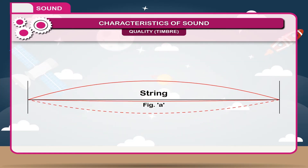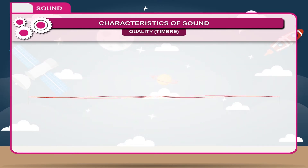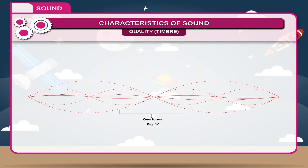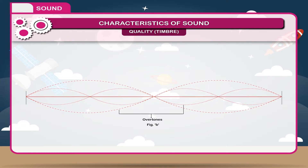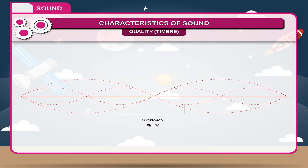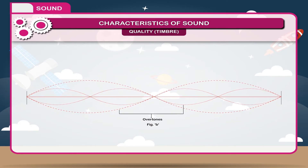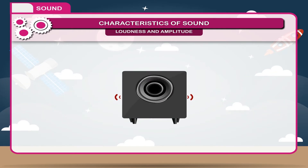At the same time, sections of the string vibrate two times and four times faster than the fundamental tone and produce sounds of higher pitch. When sections of the string vibrate faster than the fundamental tone, notes called overtones are produced, as shown in figure B. Sounds always have a fundamental tone and one or more overtones. The blending of the fundamental tone and the overtones produces the characteristic quality or timbre of a particular sound.